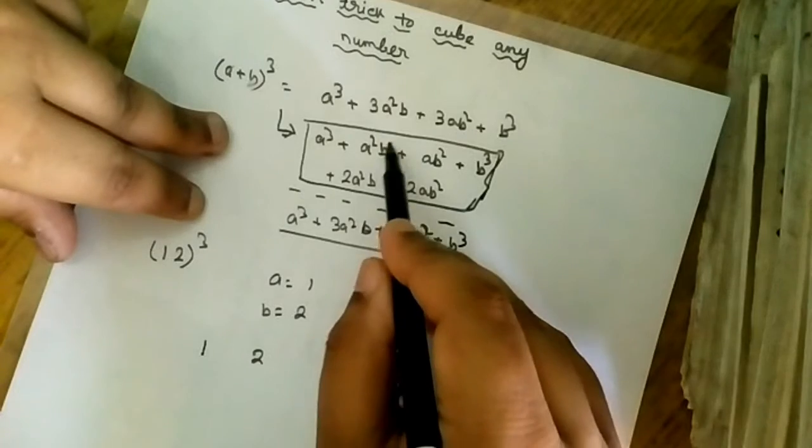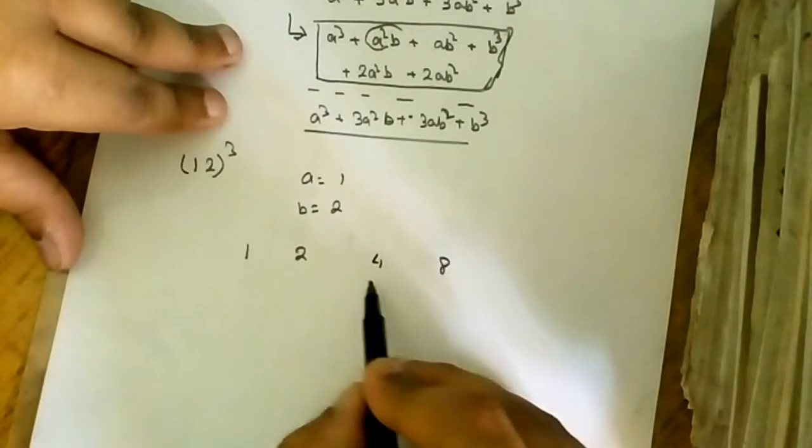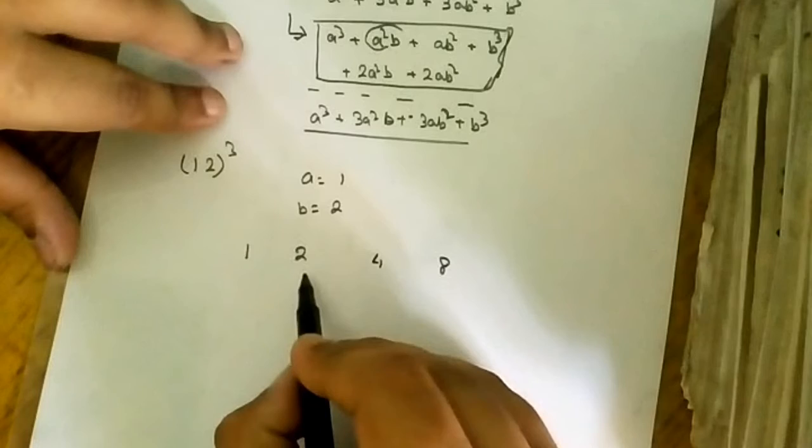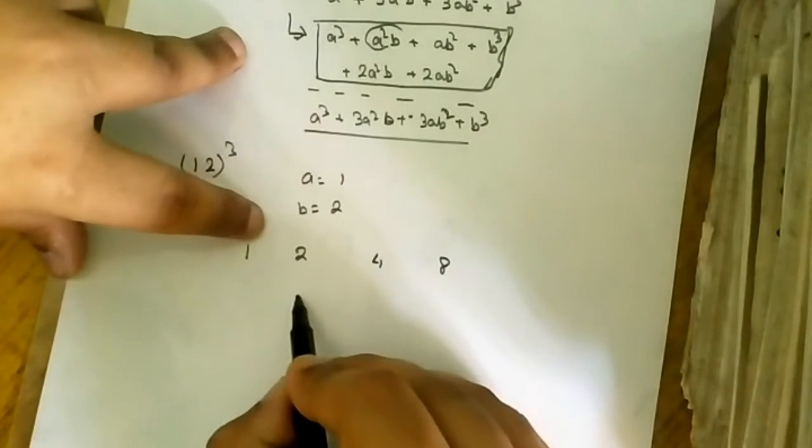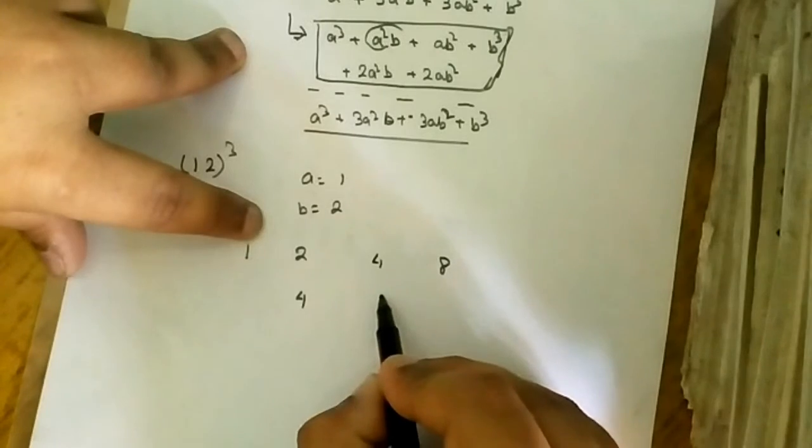line I have to double the a square b and ab square. That means I have to double 2 and I have to double 4. If I double 2 then answer would be 4 and if I double 4 then answer would be 8.